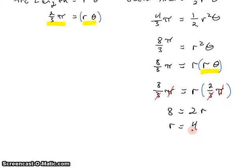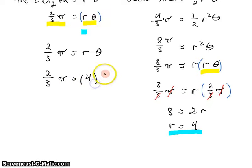So now we have the radius, that's 4. And we didn't have to work with quadratics. Let's take this result and plug it in over here. We know that 2 thirds of pi is R theta. But we know that R is 4. So 2 thirds of pi is 4 times theta, sorry. 2 thirds of pi is 4 theta.